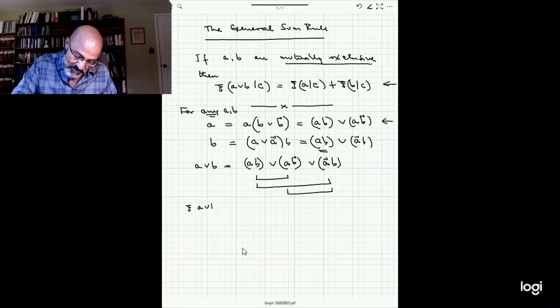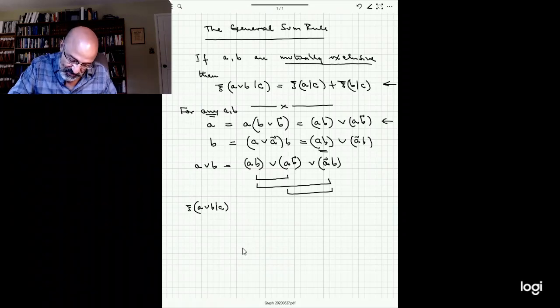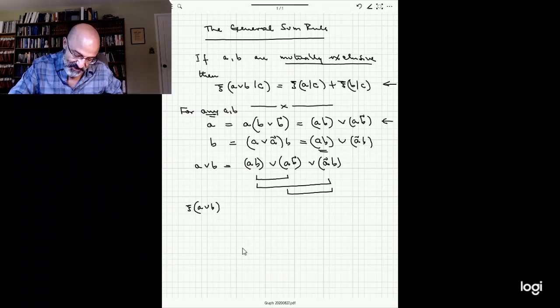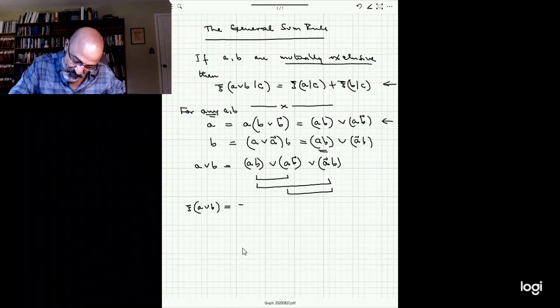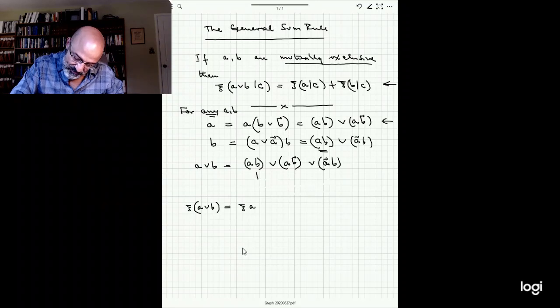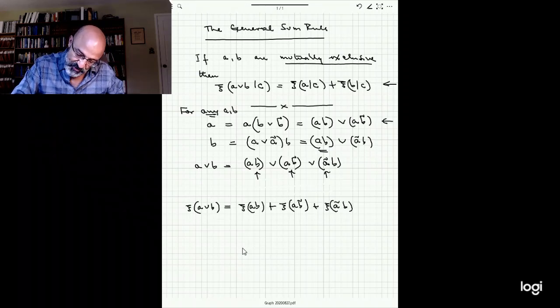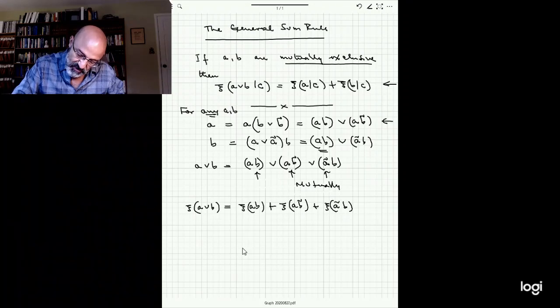Here, let's write it out. A or B in the context of C. You know what? I'm not going to write in the context of C anymore because we're just writing everything in the context of C. So I'm going to write it in the simplified way. It's going to be the degree of belief of the first. This one, AB, plus degree of belief of the second, plus degree of belief of the third. Because these three are all mutually exclusive.